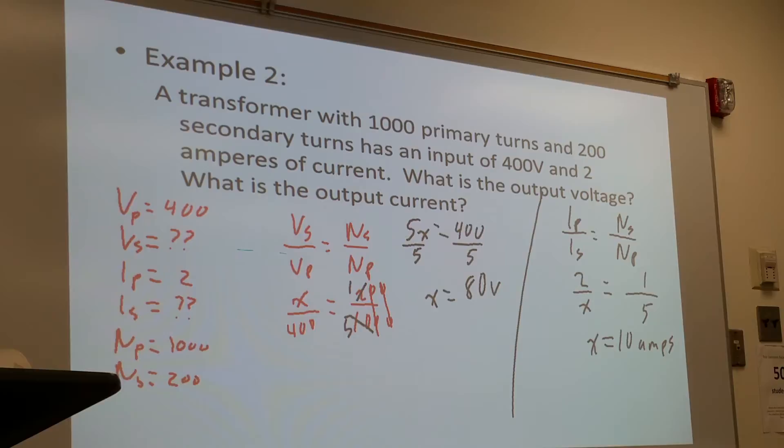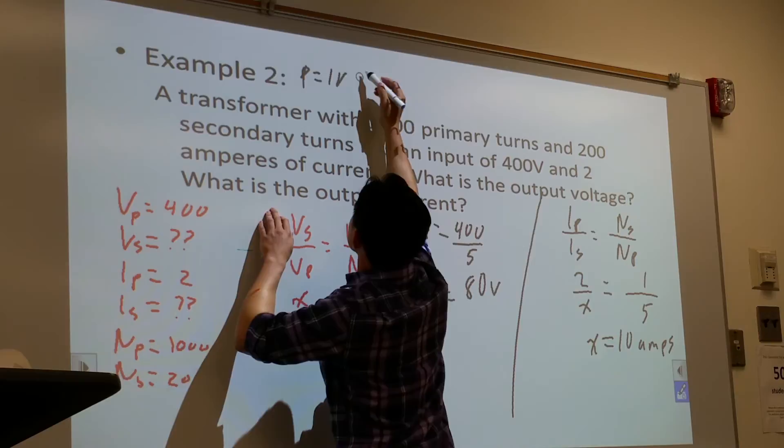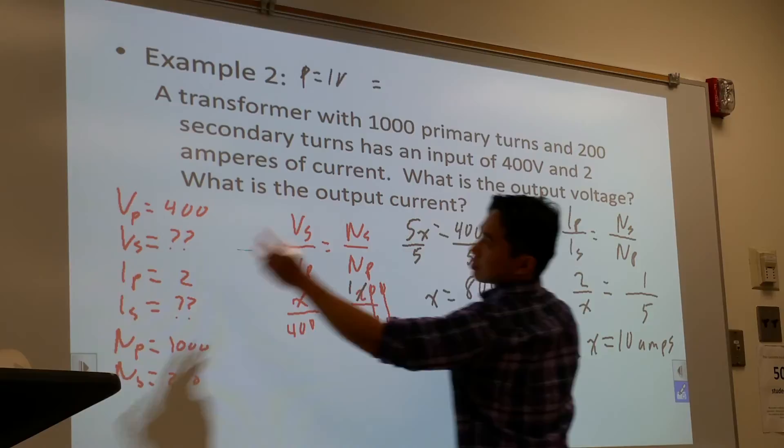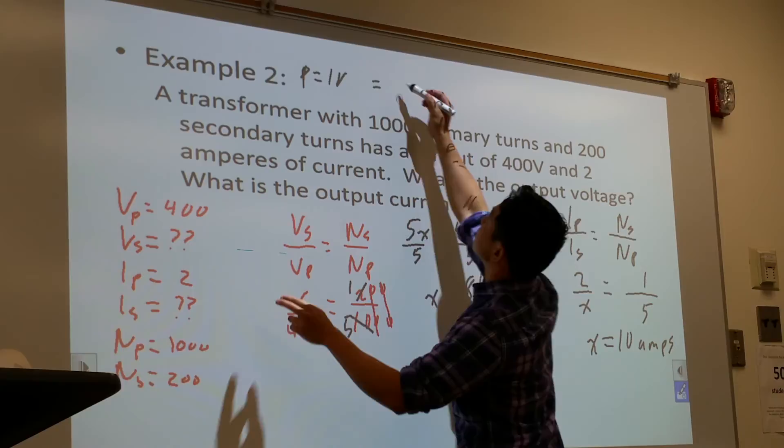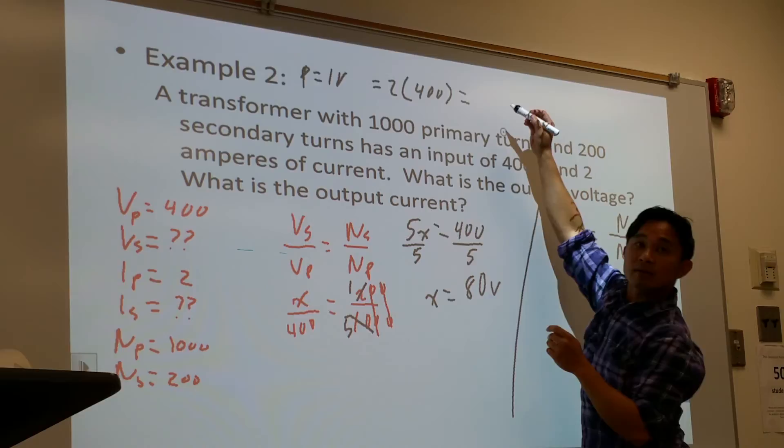Current times volts, P equals IV. Or current squared times resistance. Since we know current and voltage, we'll be using this one. So input power would be P equals IV, which means the power is current, input current, which is 2. And voltage is 400, which means power is 800 watts.